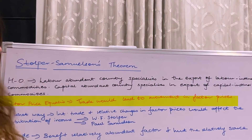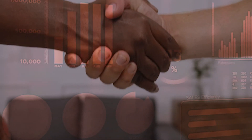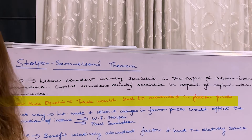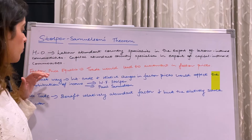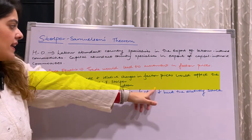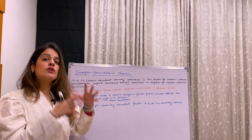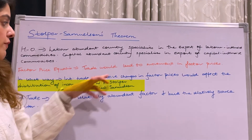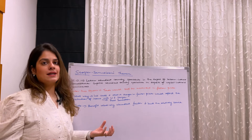Now, Factor Price Equalization theory said that when these two countries trade, it would definitely lead to a movement in factor prices — the prices of labor, capital, and so on. The question of how international trade and relative changes in factor prices would affect the distribution of income in a country is essentially what was studied by W.F. Stolper and Paul Samuelson.